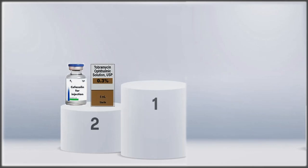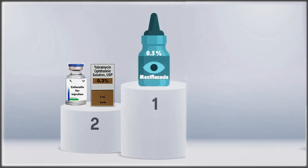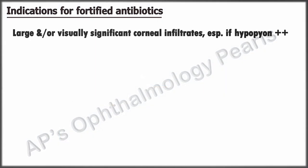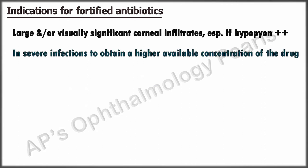Combination therapy with fortified antibiotics is generally not the first line of treatment for mild to moderate bacterial keratitis, as monotherapy with commercially available topical fluoroquinolones has been shown to be just as effective. However, they may be considered in the following situations: large and/or visually significant corneal infiltrates, especially if a hypopion is present, or in severe infections to obtain a higher available concentration of the drug.